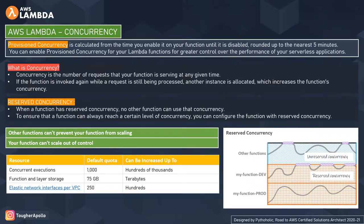Concurrency is the number of requests your function serves at any given time. To ensure a function can always reach a certain level, we configure it with reserved concurrency. As the term suggests, we are reserving concurrency quota for a function's efficiency and need. With reserved concurrency, two effects apply: other functions can't prevent your function from scaling, and your function can't scale out of control because it has a limit on the concurrency to which it can scale.